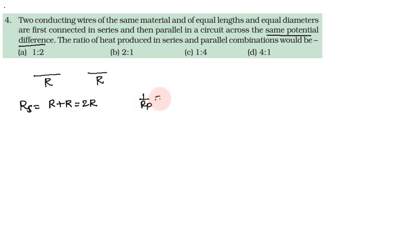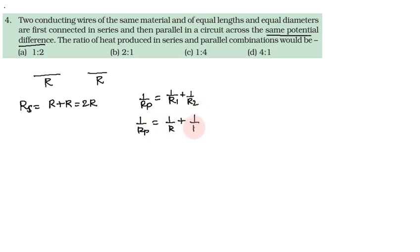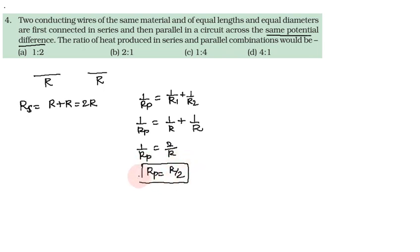For parallel: 1/Rp = 1/R1 + 1/R2 = 1/R + 1/R = 2/R, so Rp = R/2. For series: Rs = R + R = 2R.